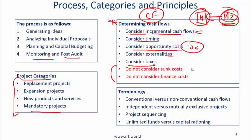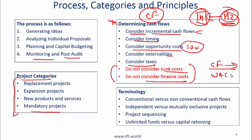In red I'm showing you the items that you should not consider. Any sunk costs should not be considered in the decision-making process, and also you should not consider finance costs. The reason for this is that when you project your cash flow, that cash flow is going to be discounted at weighted average cost of capital, and the finance cost is already built into WACC.